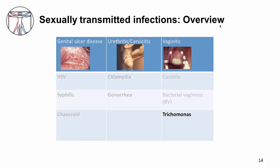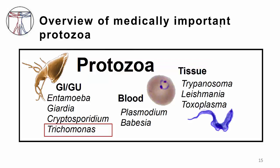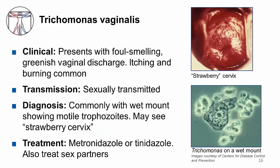Finally, let's discuss trichomonas. Trichomonas is a protozoan, which is a single-cell parasite. Patients with trich, as it is also called, present with foul-smelling greenish vaginal discharge; itching and burning is common. You can see motile trophozoites on a wet mount. Strawberry cervix is another finding and refers to the punctate hemorrhage of the cervix seen with trich infections. Note that because trichomonas is a card-carrying SDI, you also need to treat sex partners. Metronidazole or tinidazole are the drugs of choice.